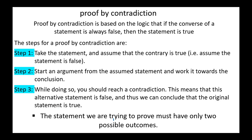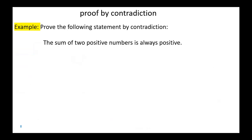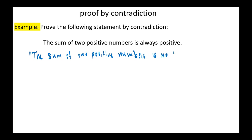In this method, the statement we are trying to prove must have only two possible outcomes. Example: prove the following statement by contradiction — the sum of two positive integers is always positive. We start with the opposite: the sum of two positive numbers is not always positive, or there exist two positive numbers A and B that sum to a negative number.